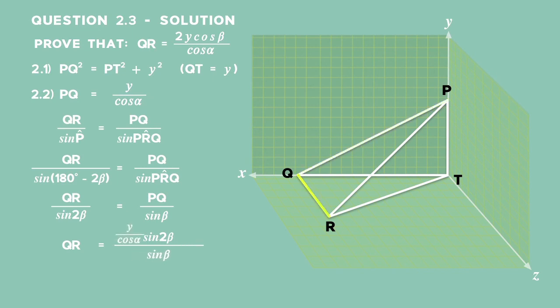So QR is equal to Y over cos alpha multiplied by 2 sine beta cos beta by using the double angle expansion for sine 2 beta, all divided by sine beta. We can simplify further by canceling out the common factors of sine beta in the numerator and denominator and get QR is equal to 2Y times cos beta, all divided by cos alpha.